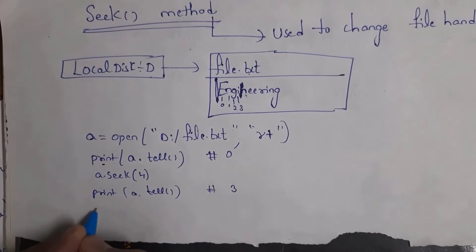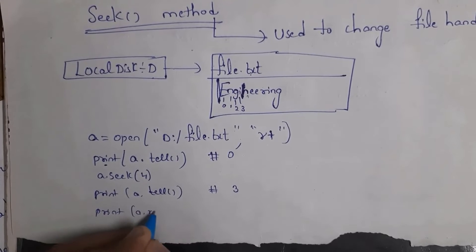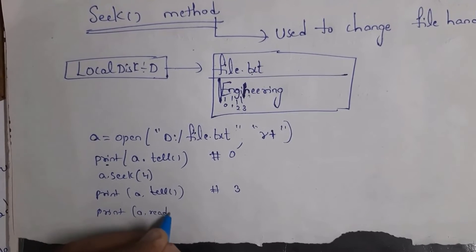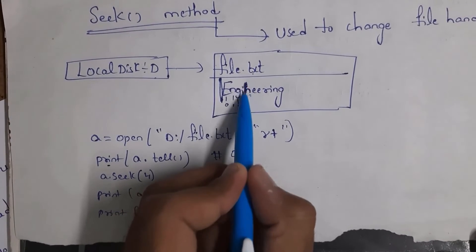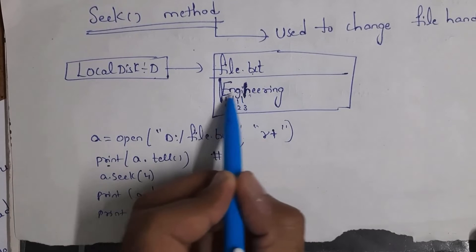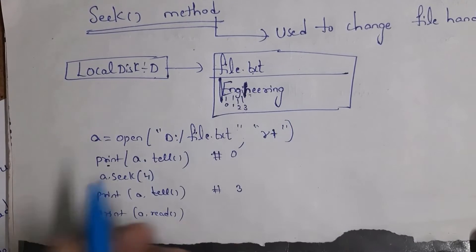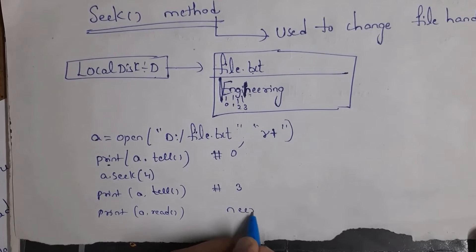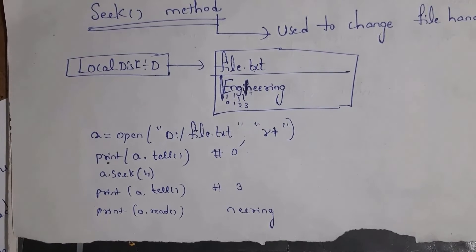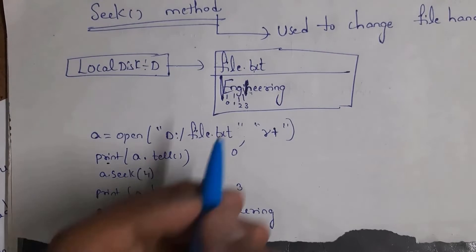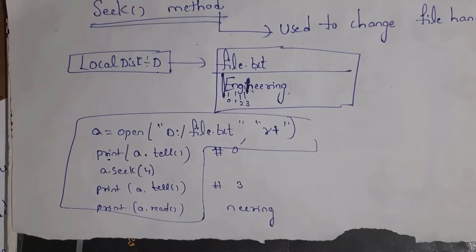Whenever you write here print(a.read), you will get output. Actually, my cursor is here at index number 3. So it will not print E, N, G, I — it will print from N. So I will get output N, E, E, R, I, N, G, because my cursor is at index number 3 and it will print data from index number 3. This is the program. The seek method is used to change cursor position and the tell method is used to identify cursor position.